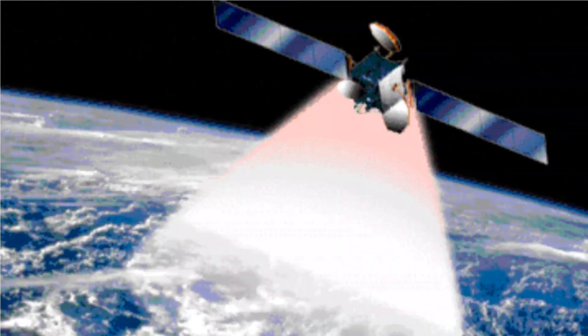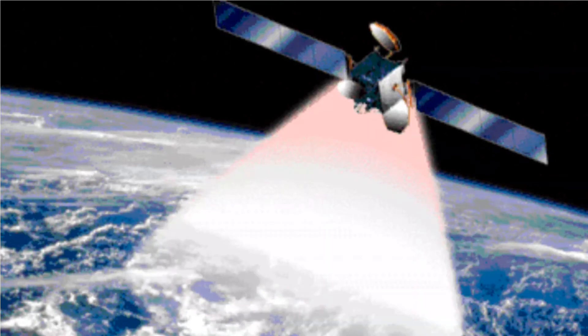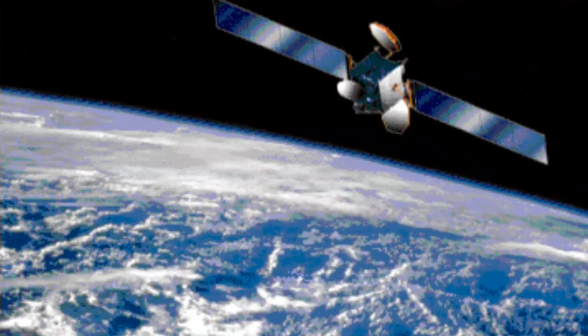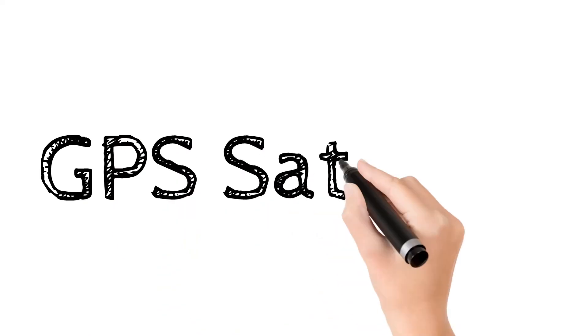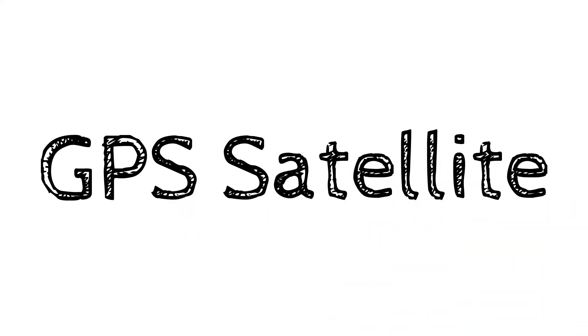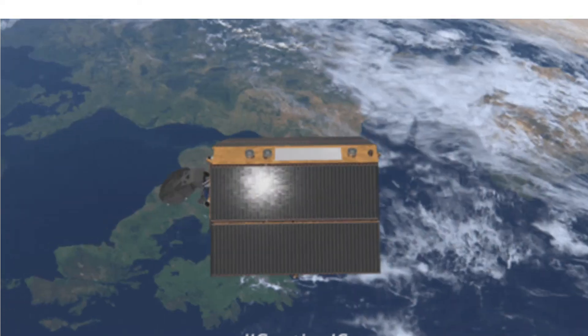Today we will discuss about GPS satellites. A GPS satellite is a satellite used by NAVSTAR Global Positioning System. NAVSTAR stands for Navigation System using Timing and Ranging. The Global Positioning System is a space-based satellite navigation system that provides location and time information in all weather conditions, anywhere on or near the Earth.